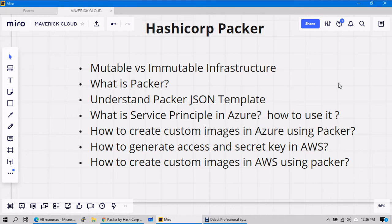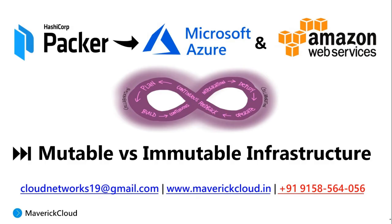HashiCorp Packer is a third-party tool, so when you want to interact with AWS you need some sort of authentication and authorization. That will be granted in the form of an access key and secret key. We'll see how to generate and assign that key for your JSON template, and also how to create custom images in AWS. So let's get started with the series.